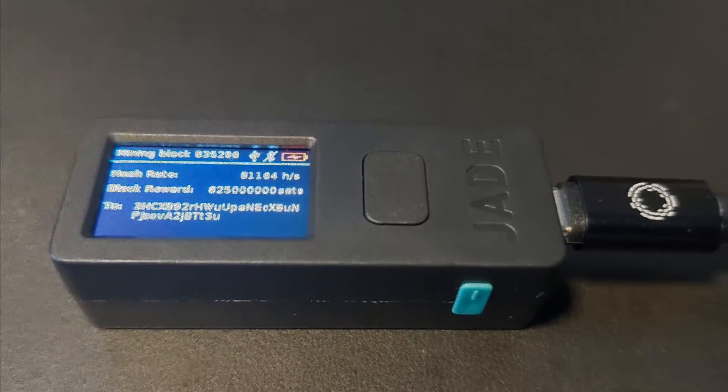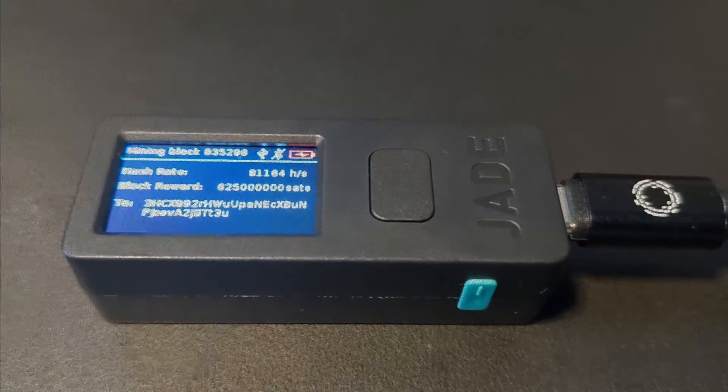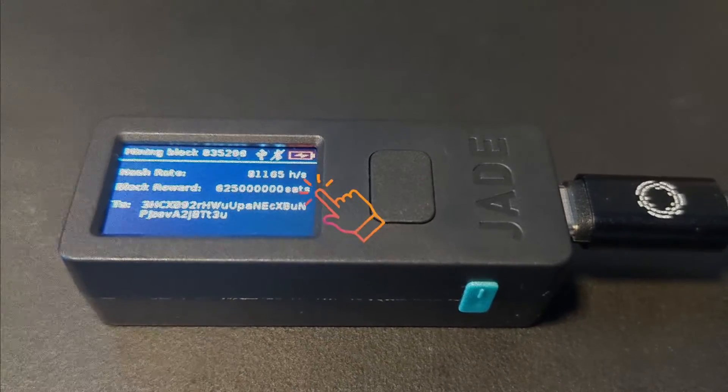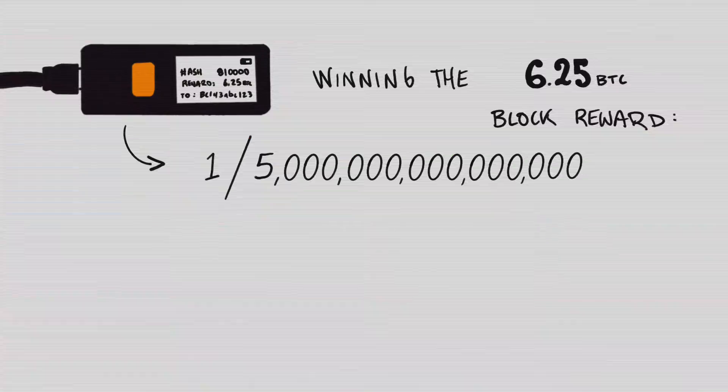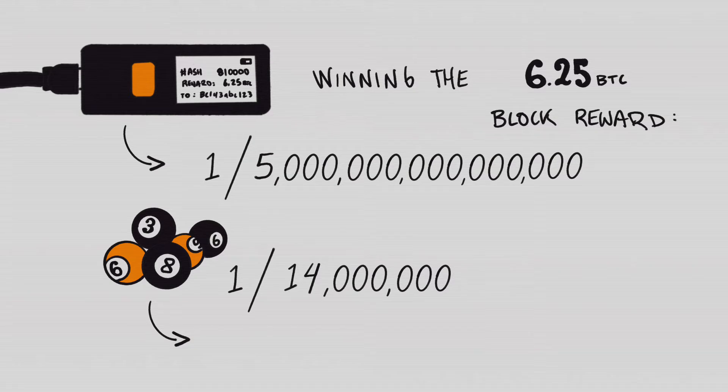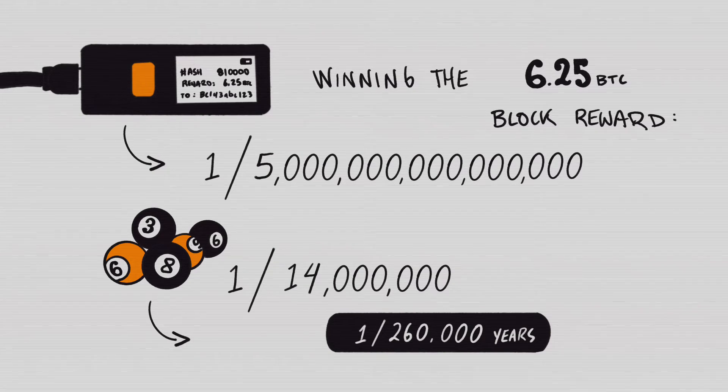Now what you're probably waiting for is the odds of you winning this 6.5 Bitcoin reward. Every 10 minutes you have this running you have a one in five quadrillion chance of winning that 6.5 Bitcoin. Now the odds of winning a six ball lottery are one in 14 million. If you were to buy one lottery ticket in such a scenario each week, you could expect to win the lottery one out of every 260,000 years.